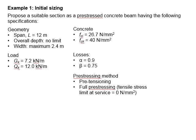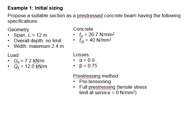Let us try an example on the initial sizing. You are asked to propose a suitable section as a prestressed concrete beam with the following specifications. The beam has a span of 12 meters, with no limit on the overall depth and a maximum width of 2.4 meters.